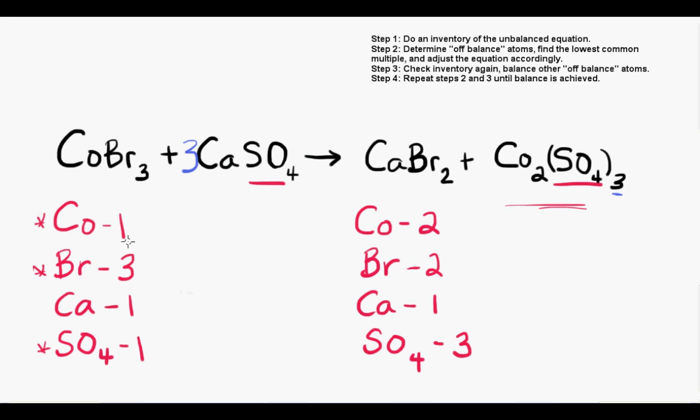When I update my inventory now, you can see that we've balanced sulfate, but we also altered calcium because we put that coefficient in front of calcium sulfate, which will affect everything in the compound. So when I adjust that inventory, you can see that we've thrown calcium off balance.